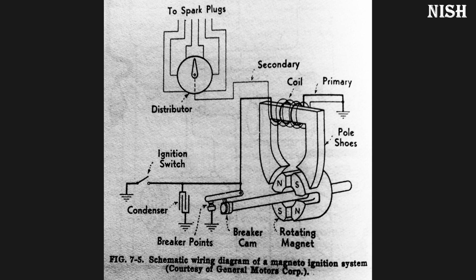The secondary winding of the ignition coil has more windings. This is because we need a very high voltage for the spark plug to generate a spark. The magneto generates a relatively small amount of current which is not sufficient to make a spark on its own.